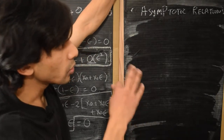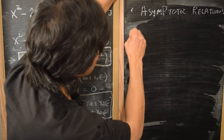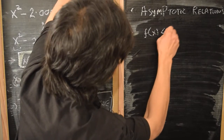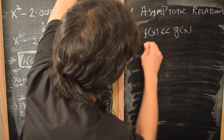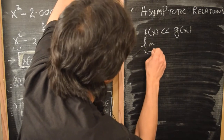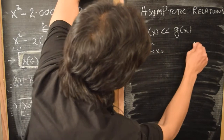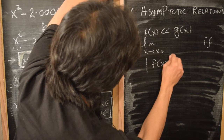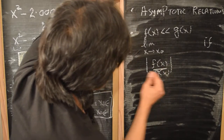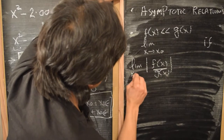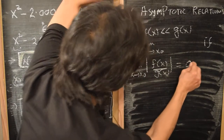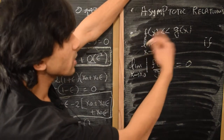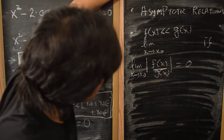We need to talk about two such relations for now. Given a function f(x), we say that f(x) is much much less than another function g(x) in the limit that x goes to x₀, if |f(x)/g(x)| → 0 as x → x₀. All this says is that as we approach x₀, the function f(x) is much much smaller than g(x).